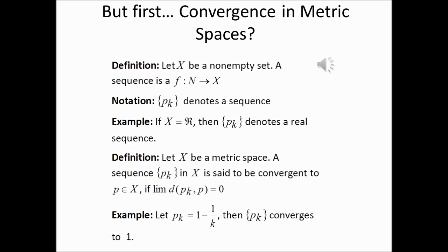Now let us formally define convergence in the metric space. Suppose X is a metric space. A sequence p sub k in X is said to converge to p in X if the limit as k goes to infinity of the ordinary distance between the k-th term of the sequence and p is 0.